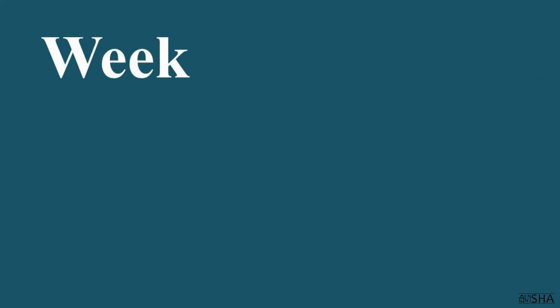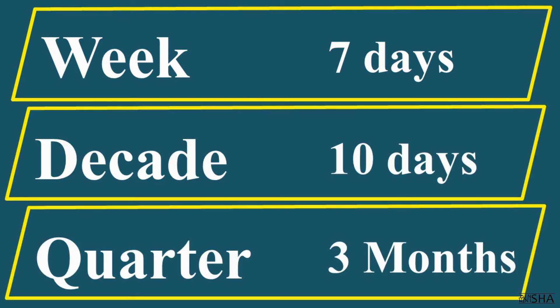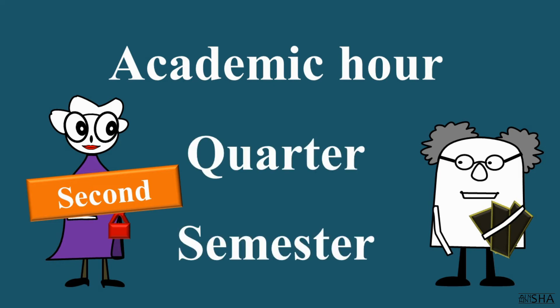There are also other periods of time. For example, a week is 7 days. A decade is 10 days. A quarter is 3 months. In educational institutions, it is customary to determine time by academic hours, that is the time of one lesson, and also in quarters or semesters.